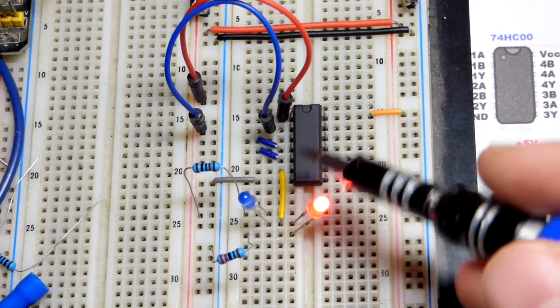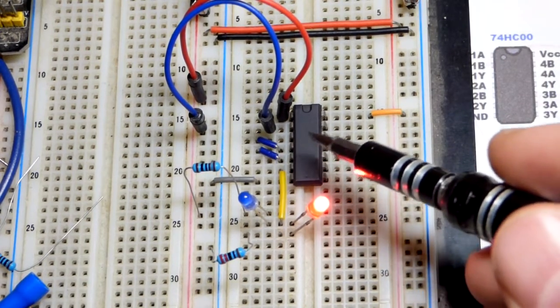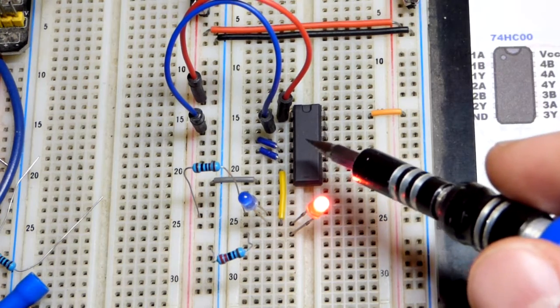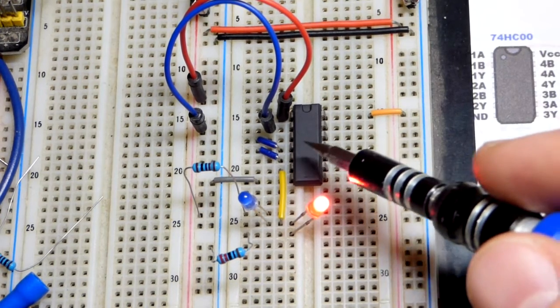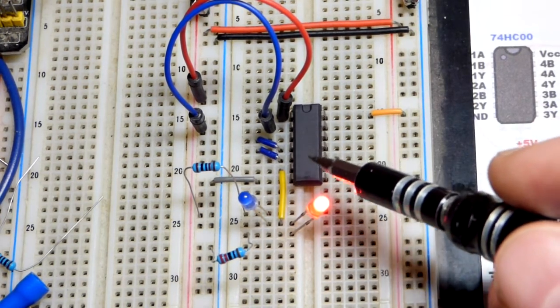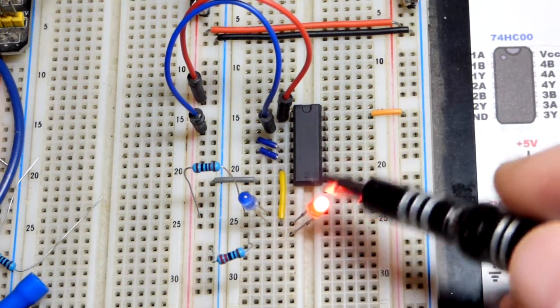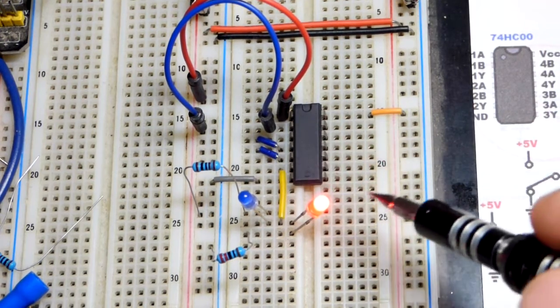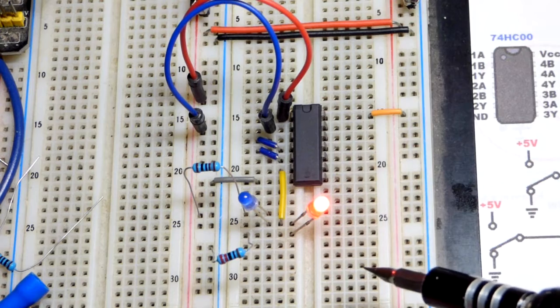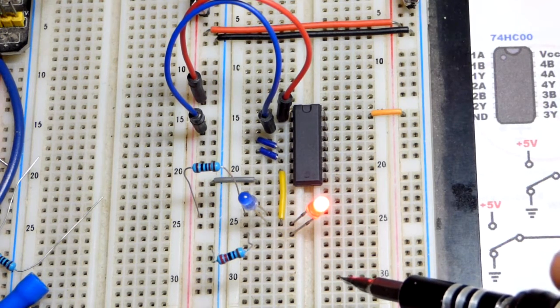Also, since NAND gates are universal logic gates, that's the one, NAND or NOR, but probably NAND, would be the one you want to buy the most of. If you're going to buy a kit of logic gates, might as well get NAND logic gates because you can make them into any other logic gate. Hopefully that makes sense.